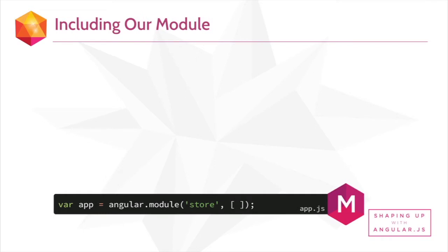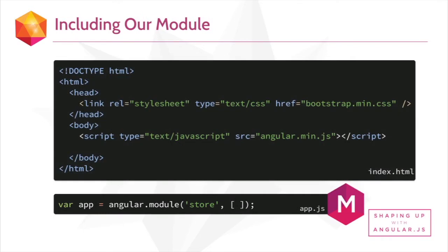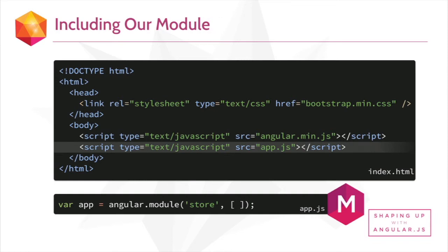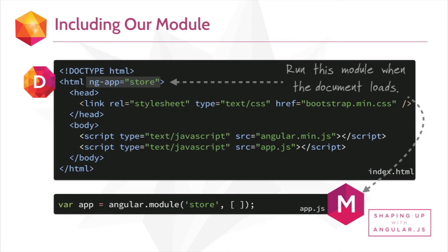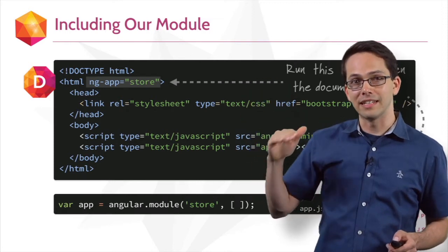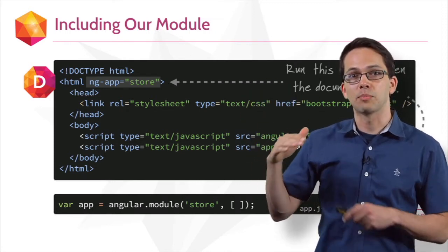This piece of code is going to live inside an app.js file, so we're going to need to include that in our HTML, as you can see right here. Then we'll need to add an attribute to our HTML tag — in this case, ng-app equals store. ng-app is another directive. This directive creates an Angular application by running this module when the document loads. It's going to treat the HTML inside of this element as part of the Angular app.